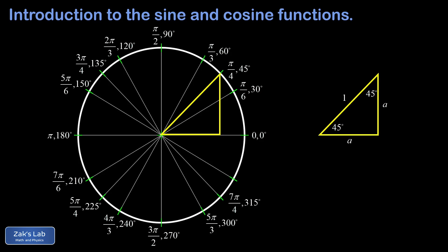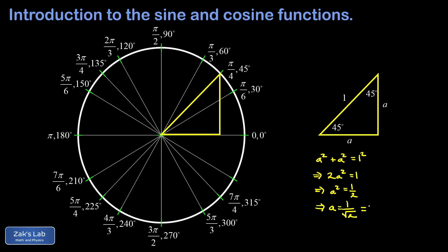This right triangle is isosceles with two 45-degree angles, so the lengths of the two legs are the same — call them a. Applying the Pythagorean theorem: a² + a² equals the square of the hypotenuse, so 2a² = 1. That means a² = 1/2, so a = 1/√2. To rationalize the denominator, multiply top and bottom by √2, giving an equivalent form of √2/2. Those are the leg lengths of the 45-degree triangle.